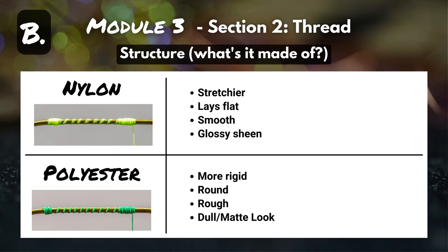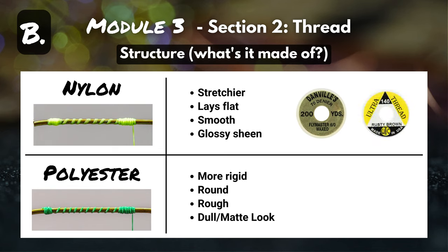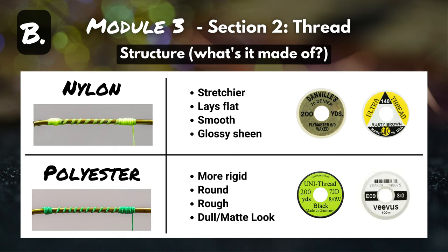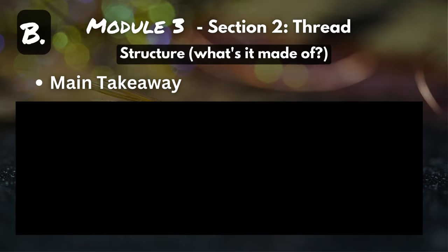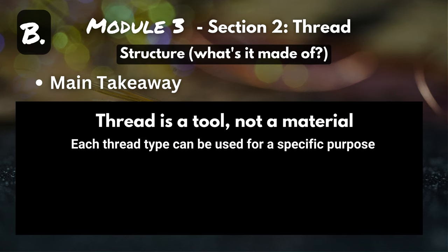Going back to our common thread brands: Danville and UTC fall in the nylon column, while Uni and Vivas are in the polyester column. You might be asking, why does that make a difference? Our main takeaway here is that thread is a tool, not a material. Each thread type can be used for specific purposes — just like tying scissors are used to trim materials, and a whip finisher is used to finish off a fly. Each tool has a specific purpose.